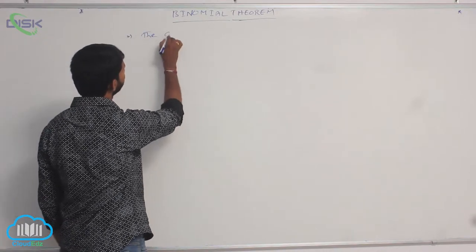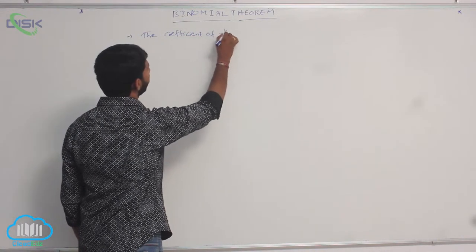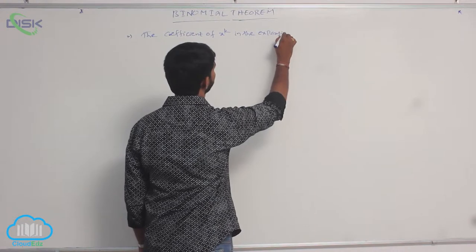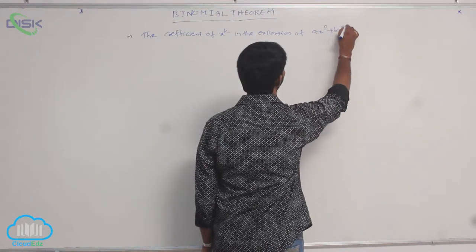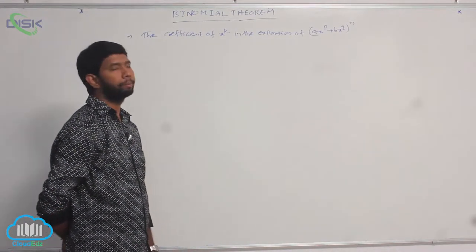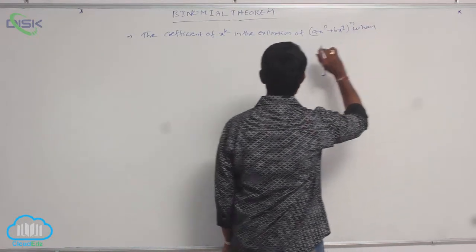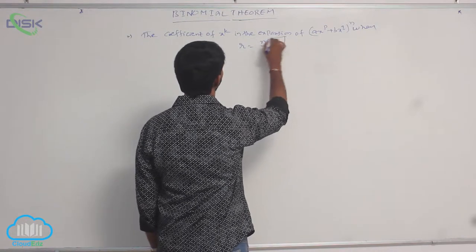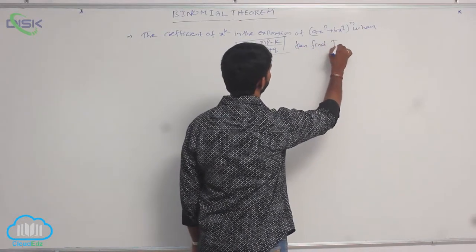The coefficient of x power k in the expansion of (a·x^p + b·x^q)^n. When r is equal to (np minus k) divided by (p plus q), then r equals (np minus k) by (p plus q). Then find T(r+1).